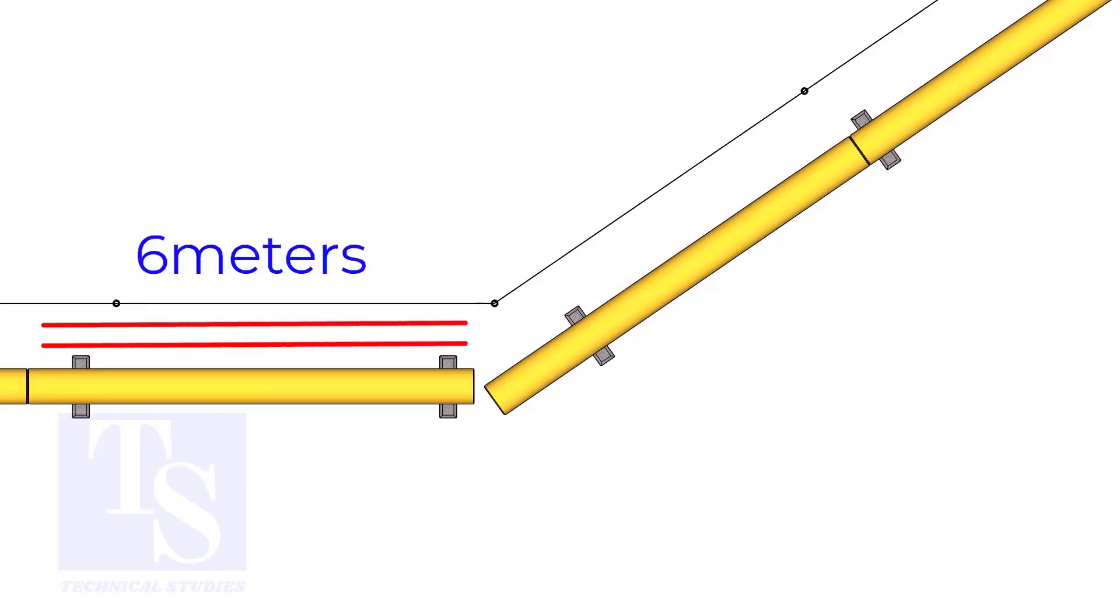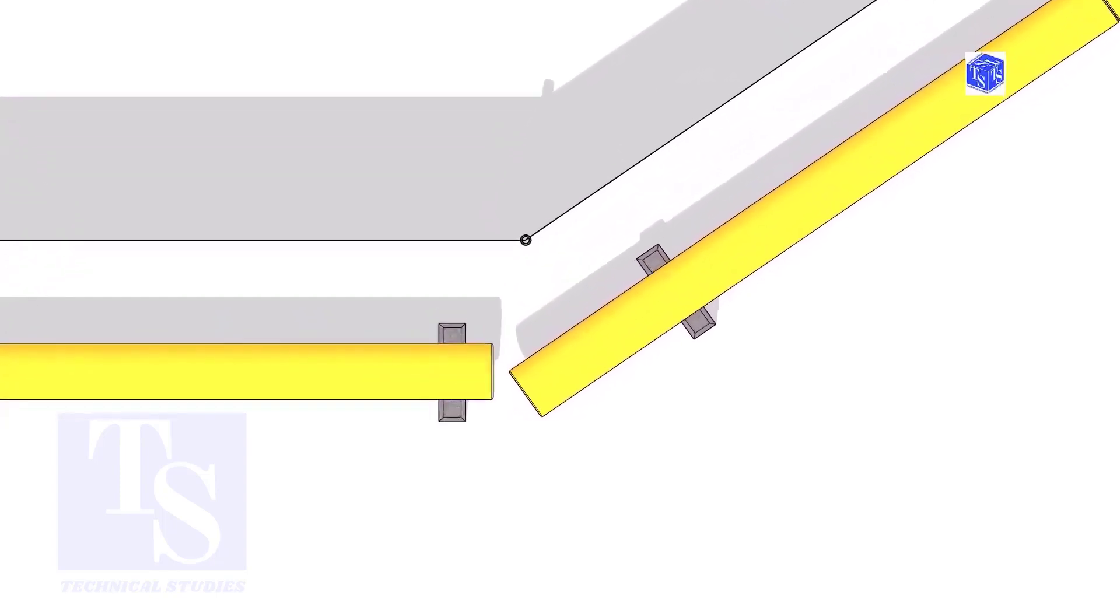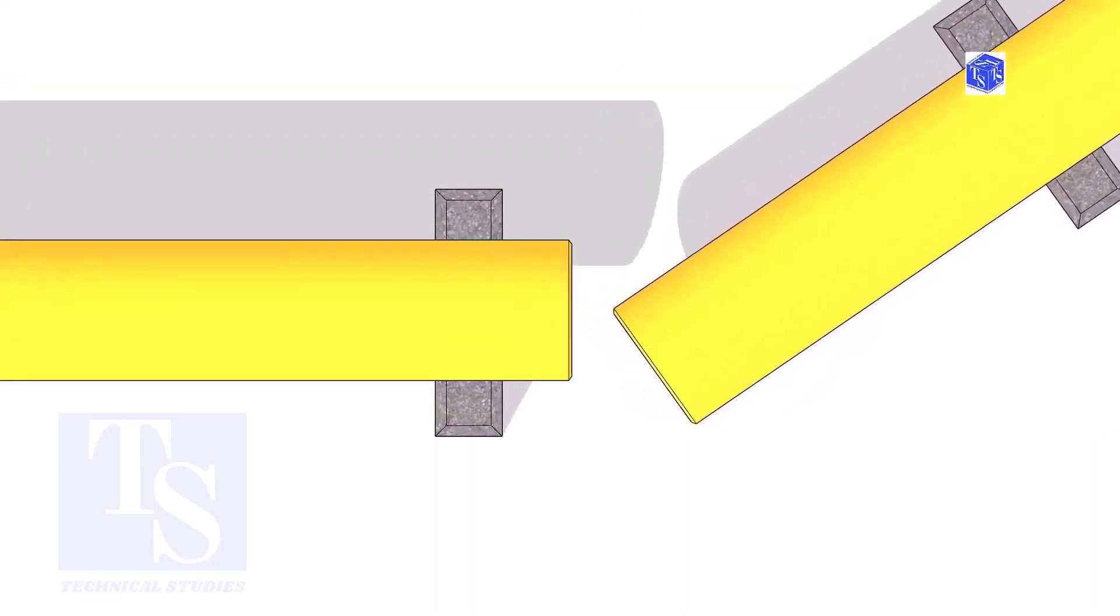The pipe shall be parallel to the fencing, not necessarily the entire length, but at least 6 meters on both sides. It's not necessary that the center lines of both pipes are in a line.